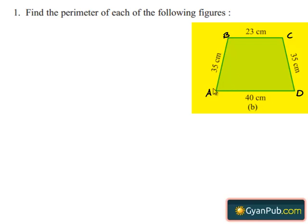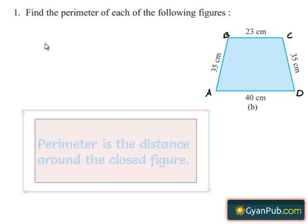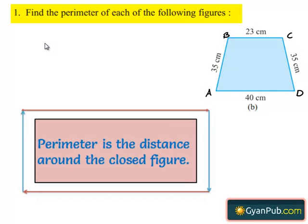Here we can observe that length of AB is 35 centimeters, BC is 23 centimeters, CD is 35 centimeters, and DA is 40 centimeters. Here we have to find the perimeter of the figure. We know that perimeter is the distance covered along the boundary forming a closed figure when you go around the figure once.